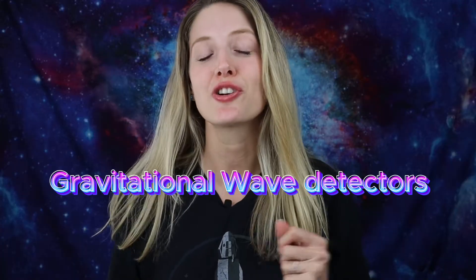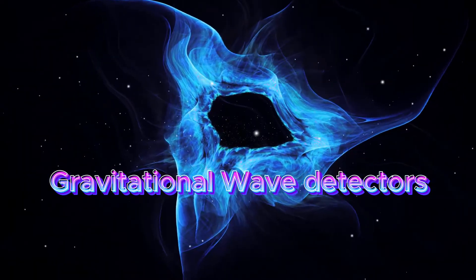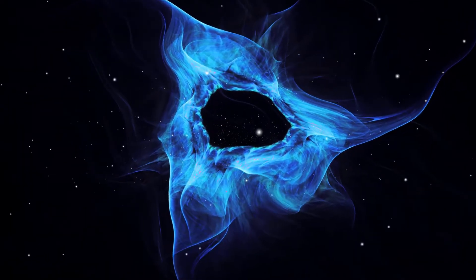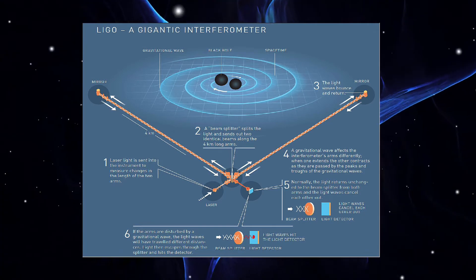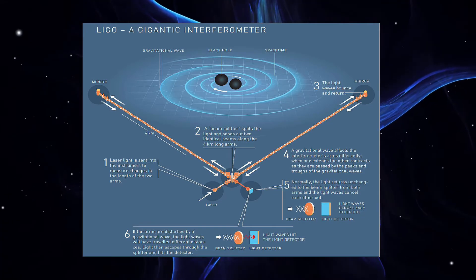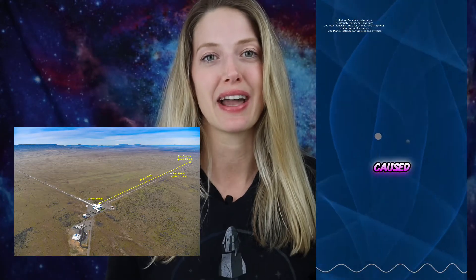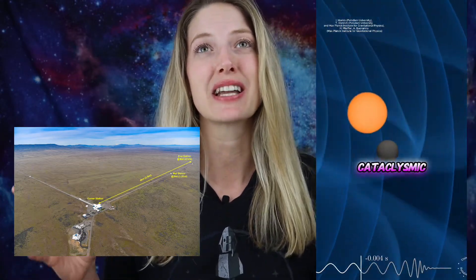Next up we have gravitational wave detectors. Instruments like LIGO and Virgo detect ripples in space-time caused by cataclysmic events like colliding black holes. These are known as gravitational waves.